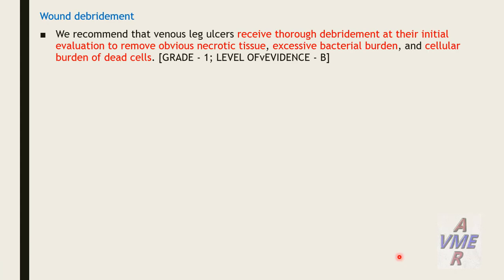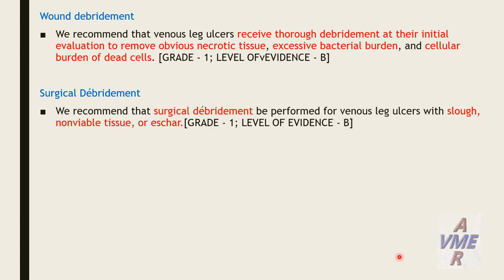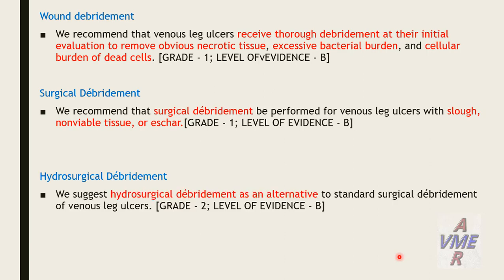Debridement: we recommend that venous leg ulcers receive true debridement at initial evaluation to remove slough, necrotic tissue, excessive bacterial burden, and dead cell burden. Surgical debridement: we recommend surgical debridement for venous leg ulcers with slough, non-viable tissue, or eschar. American Venous Forum strongly endorses surgical debridement; other types of debridement are suggestions only.